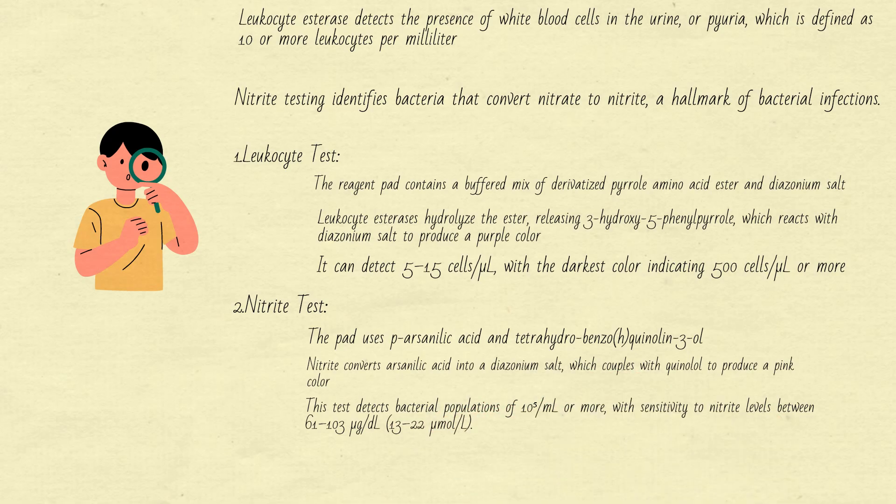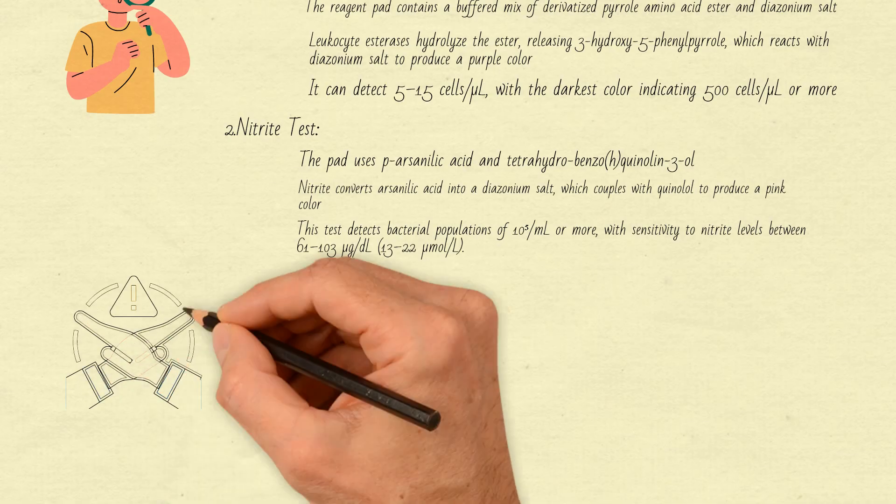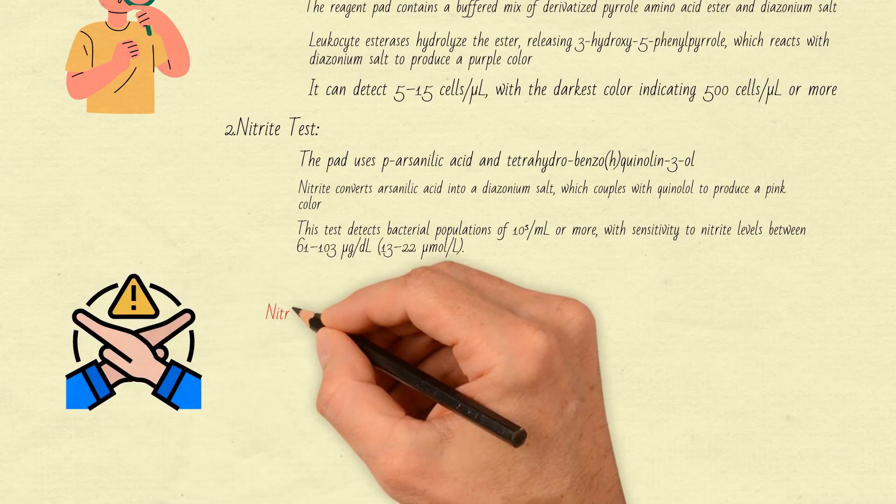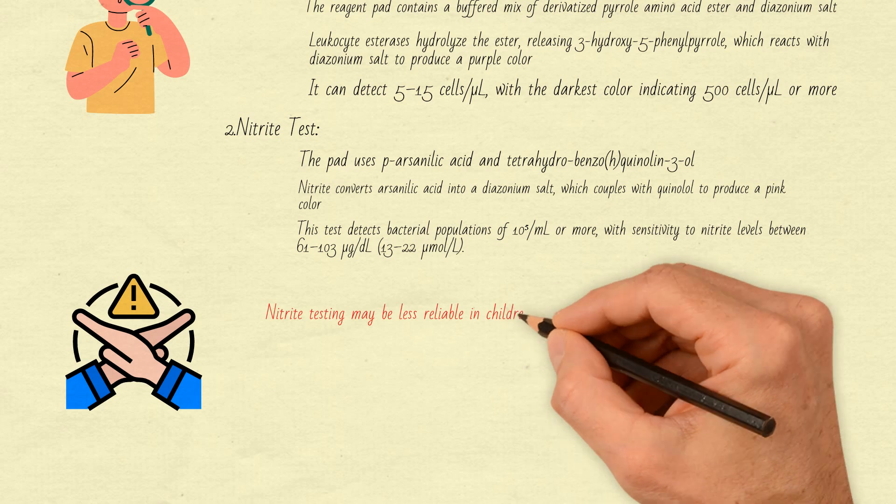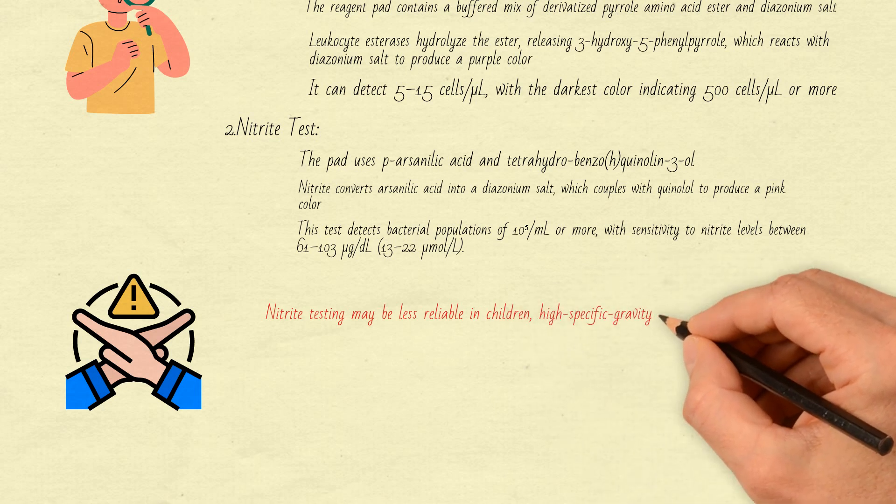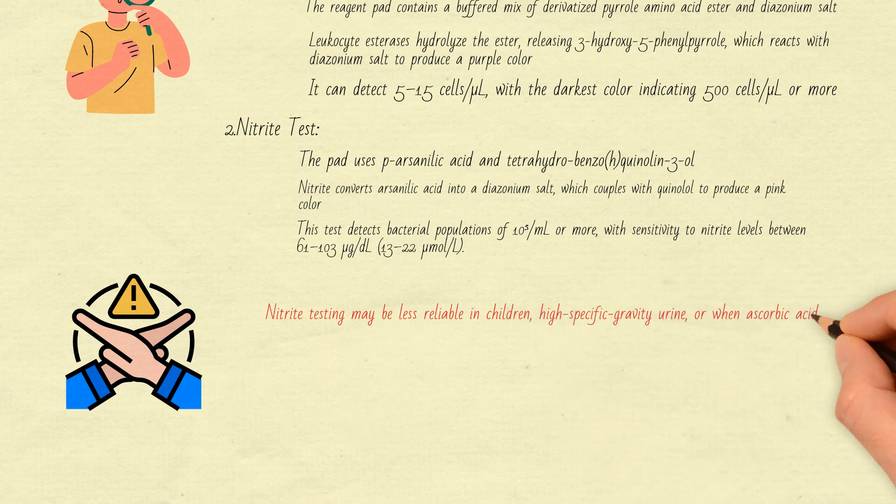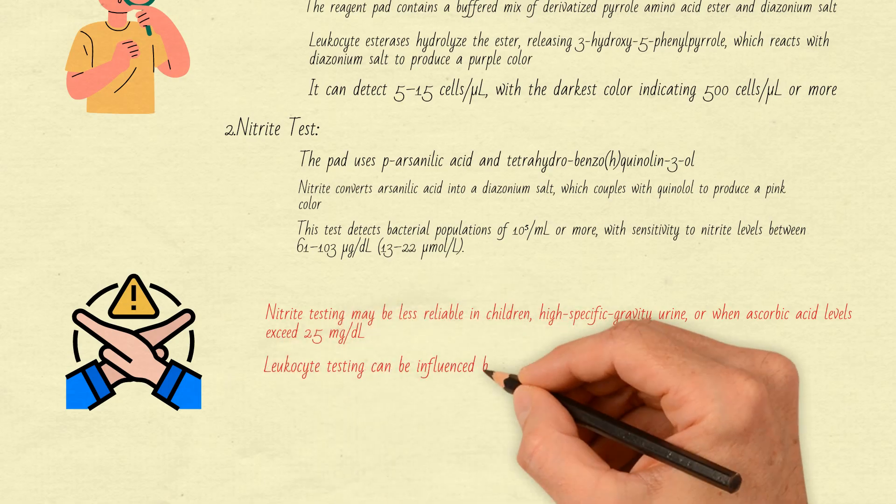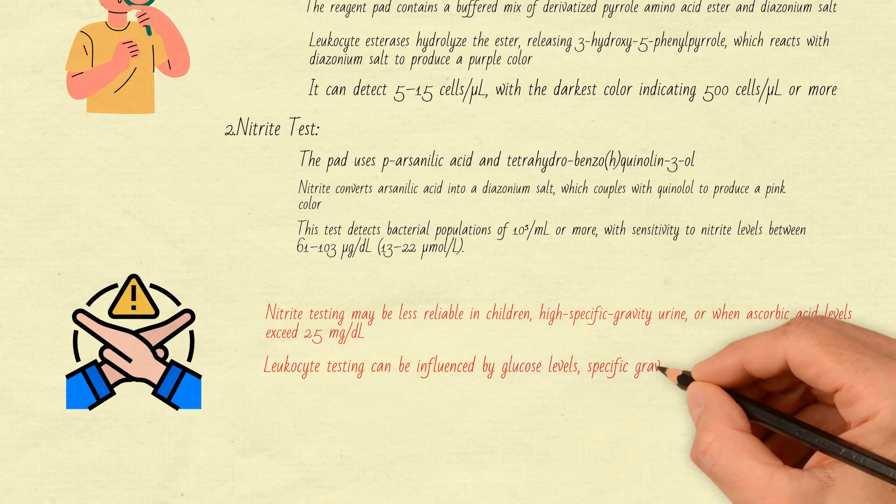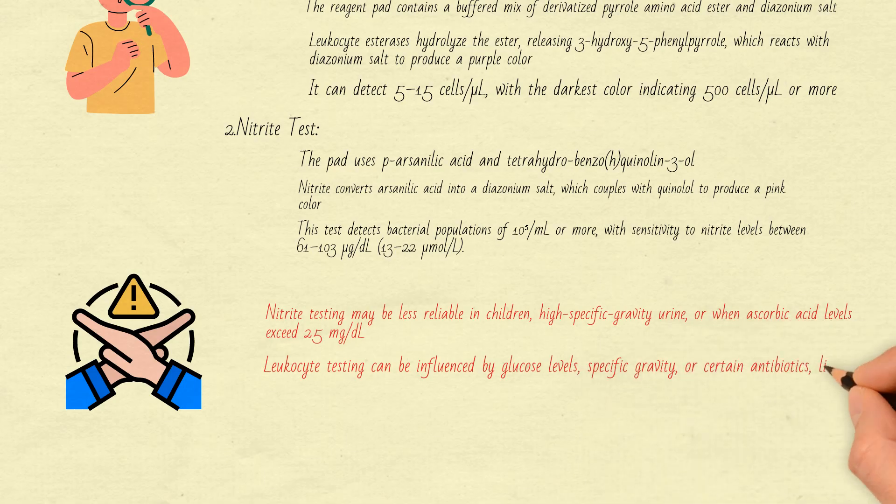The combination of leukocyte and nitrite tests is highly effective for diagnosing UTIs. If both are absent, it helps rule out infection, reducing unnecessary lab tests. However, there are limitations. Nitrite testing may be less reliable in children, high-specific-gravity urine, or when ascorbic acid levels exceed 25 mg per deciliter. Leukocyte testing can be influenced by glucose levels, specific gravity, or certain antibiotics like cephalothin or tetracycline.